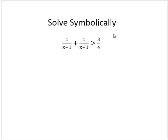Solve symbolically: 1 over x minus 1 plus 1 over x plus 1 is greater than 3 fourths. The first thing we have to do here is to turn this into something of the form—we need to make it look like f of x and then compare it to 0.